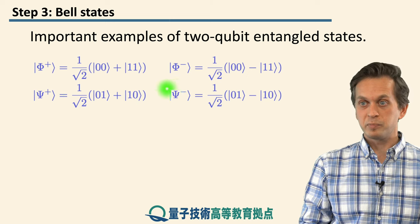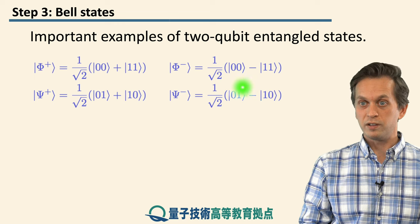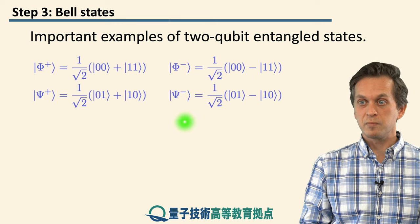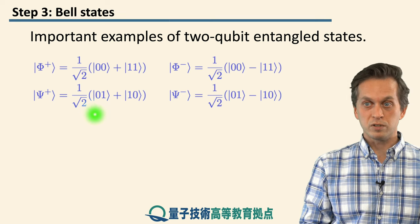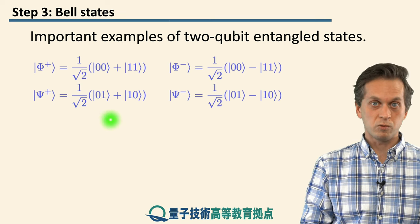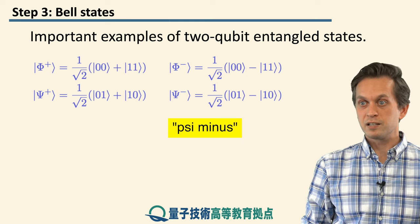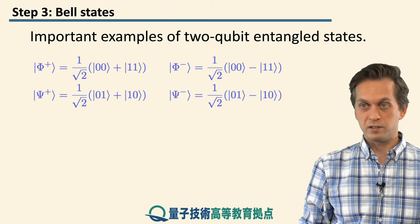Its counterpart is the phi-minus state, which is |0,0⟩ minus |1,1⟩. And there are two more states: psi-plus and psi-minus. Psi-plus is the equal superposition of |0,1⟩ plus |1,0⟩, and psi-minus is |0,1⟩ minus |1,0⟩.